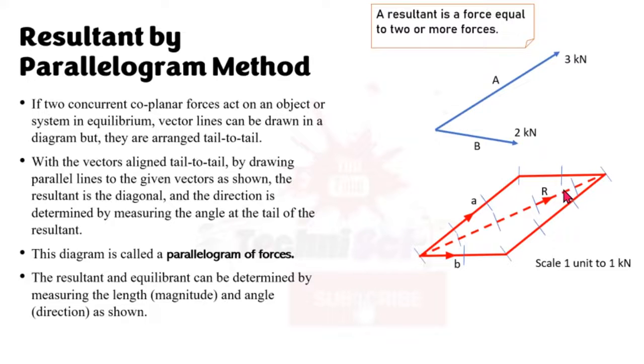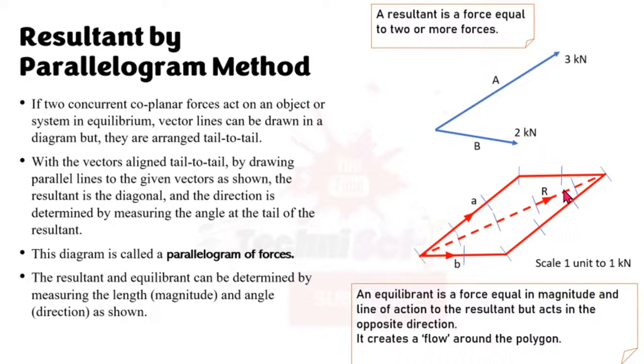Now a reminder of the equilibrant. This is a force that is equal in magnitude, so it's the same length as this resultant, as well as the line of action. So it's along the same line, but it is in the opposite direction.